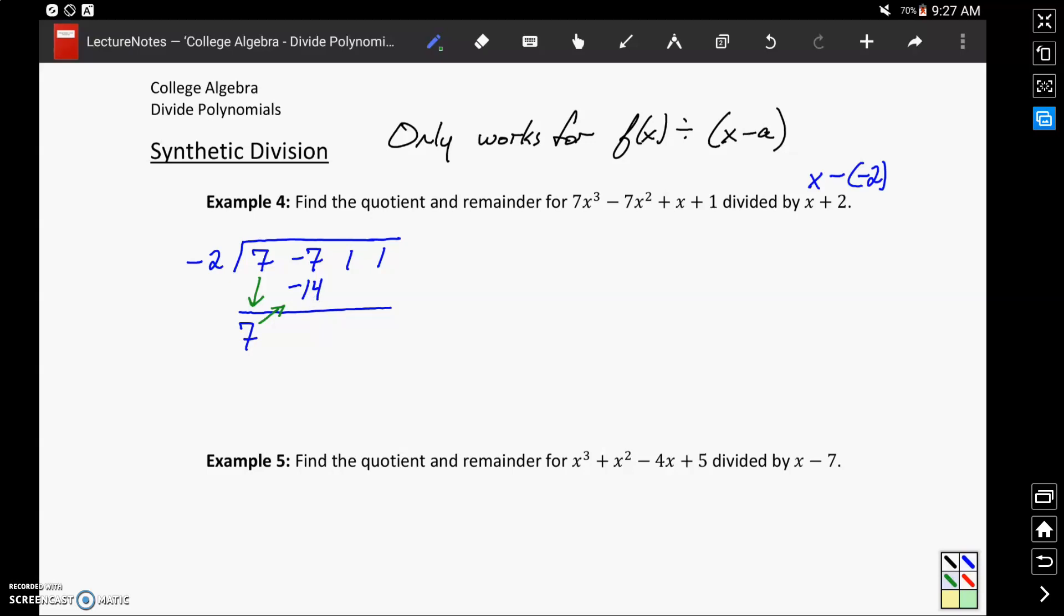Then we add those two values in the column to get negative 21, and keep repeating this zigzag pattern. Now we'll take negative 21 times negative 2 to get positive 42. We'll add those two values together to get 43.